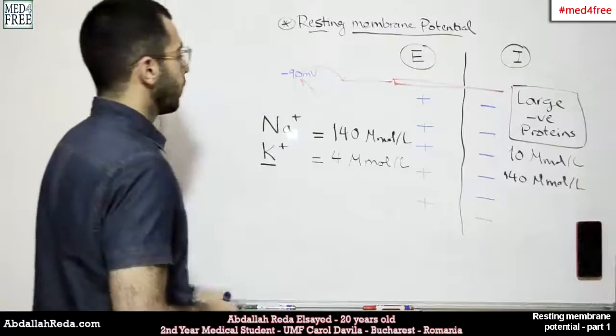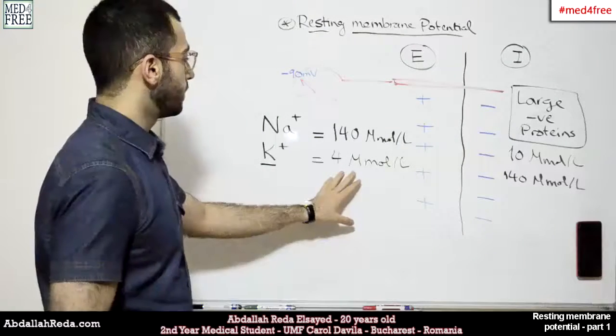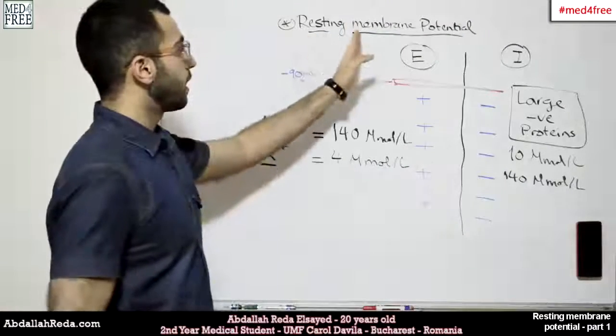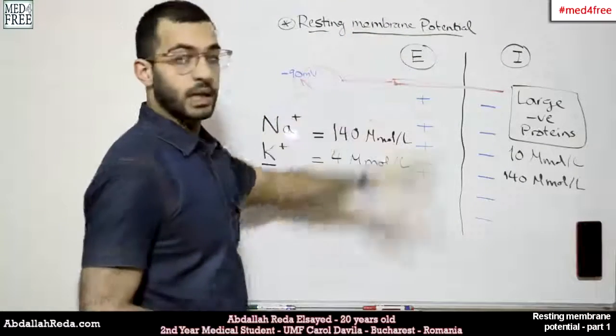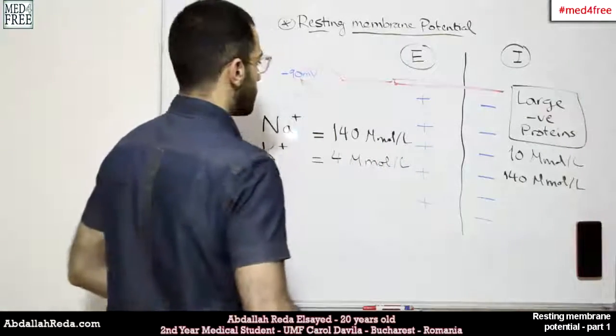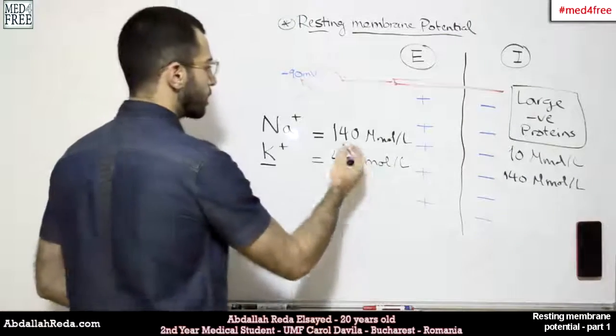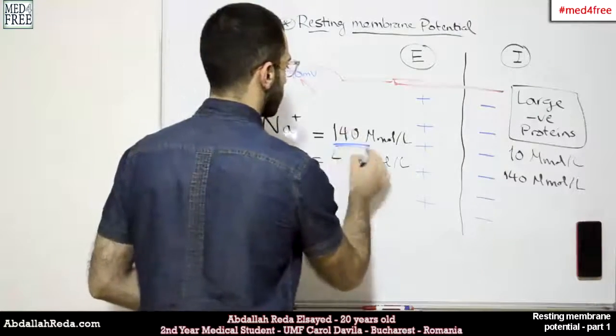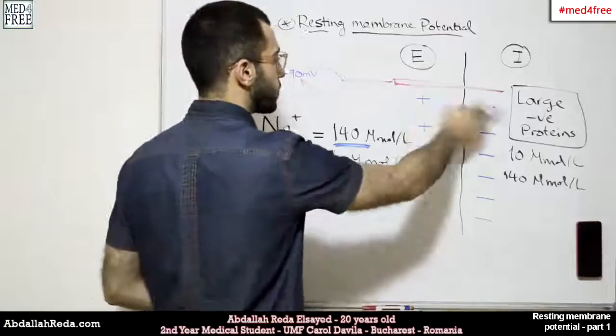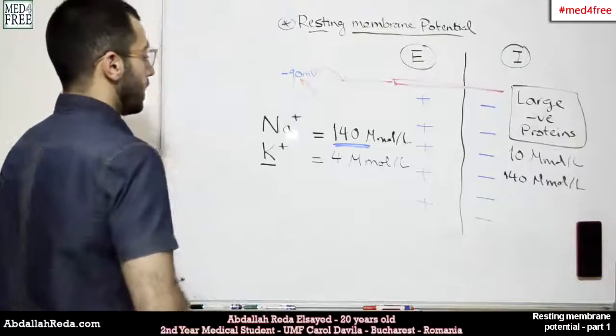What would keep the gradient in a stable state so that the membrane would be in a resting potential? From these numbers, we can see that if there is no equilibrium, because sodium is concentrated on the outside, it would always be flowing from outside to inside, and for potassium, it would be vice versa.